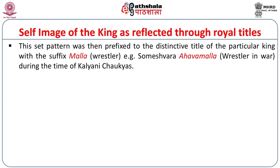In the Kalyani Chalukya period, each king also had a distinctive individual title with the suffix Malla, meaning Wrestler, added to this imperial epithet. For instance, the Kalyani Chalukya king Someshwara had the title Ahava Malla, meaning Wrestler in War. This was the manner in which the king projected himself before the ruled — the common population as well as his associates.